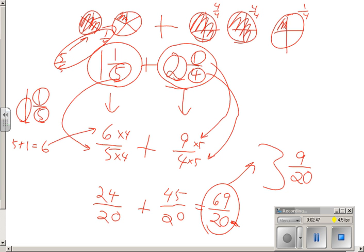And I say, can I reduce that fraction? No, I can't. So that is actually the final answer that you need to have. 3 and 9/20 is the result of 1 and 1/5 plus 2 and 1/4.